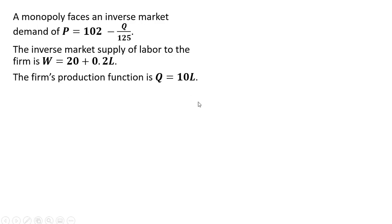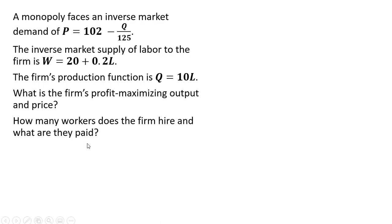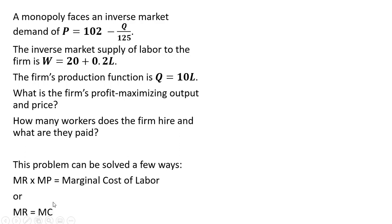The firm's production function is Q equals 10 times L, and we want to calculate the firm's profit maximizing output and price, and how many workers this firm hires and what they are paid. This problem can be solved in a number of different ways. You could calculate marginal revenue times marginal product and set that equal to the marginal cost of labor, or what we're going to do is a standard marginal revenue equals marginal cost. Let me show you how to do that in this case where we have a monopoly and a monopsony.